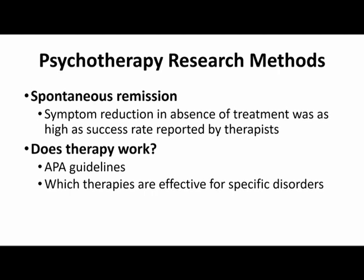This conclusion has led over the years to different standards that help ensure reports of success are backed by sound science. When we ask does therapy work, we know that the APA — the American Psychological Association — has taken it upon themselves to make sure that studies claiming a therapy is effective have been conducted as good science, including a proper control group. So we can now have more confidence that when someone reports a therapy is effective, that conclusion has been drawn from solid scientific research, allowing us to evaluate which therapies work for which disorders.